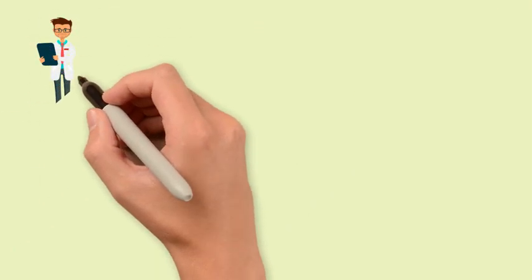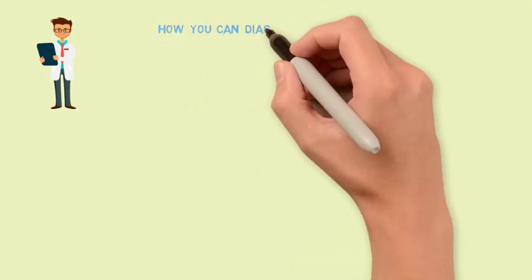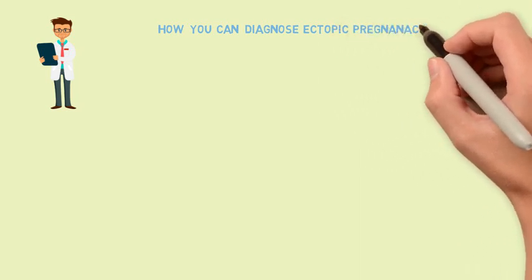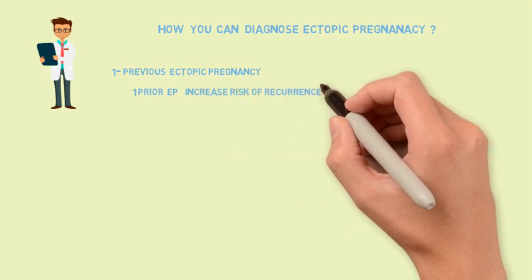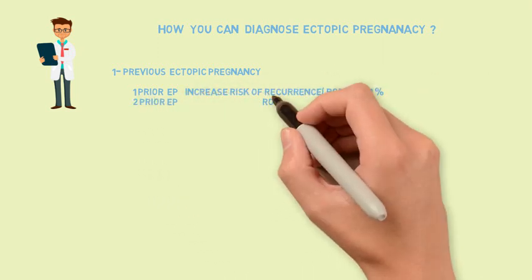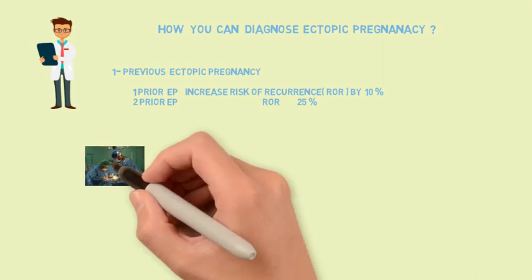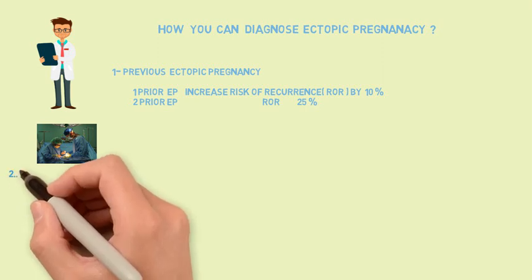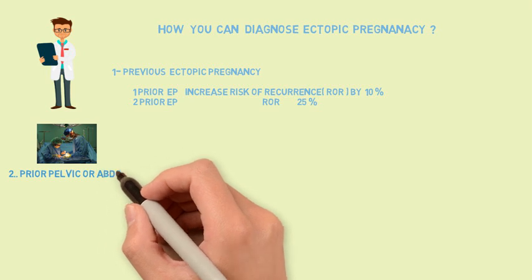How can we diagnose an ectopic pregnancy? Careful history is taken to assess the risk factors and the symptoms suggestive of ectopic pregnancy. Regarding the risk factors, if there is one prior ectopic pregnancy, the risk of recurrence increases by 10%. If there are two prior ectopic pregnancies, the risk increases by 25%. Other risk factors include prior pelvic or abdominal surgery.